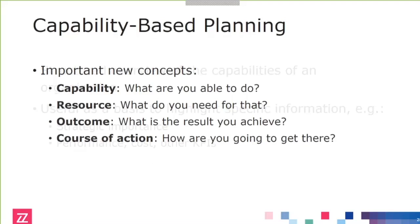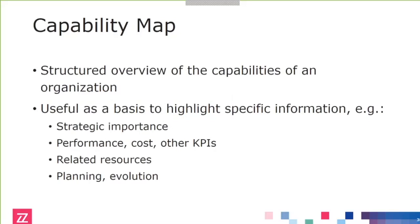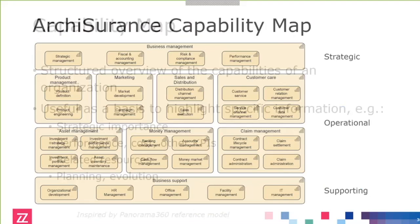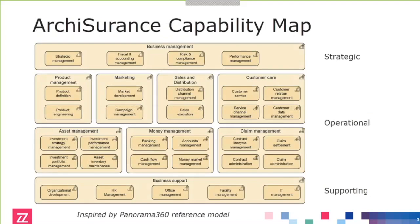Capabilities are typically used in the form of a capability map — a structured overview of what the organization does or can do. It's very useful because you can map all kinds of information onto it: strategic importance, cost, performance, KPIs, and resources. The example I'm using today is from ArchiSurance, our fictitious but realistic insurance company. This is the ArchiSurance capability map, inspired by the Panorama 360 reference model for insurance companies.